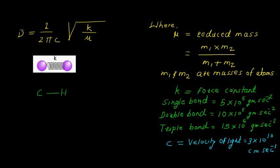Here k indicates the force constant and this force constant is different for different bonds. For single bond it is 5×10^5 grams per second square. For double bond it is 10×10^5 grams per second square.